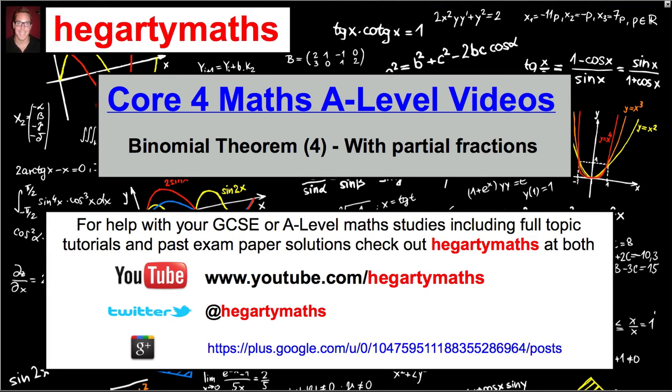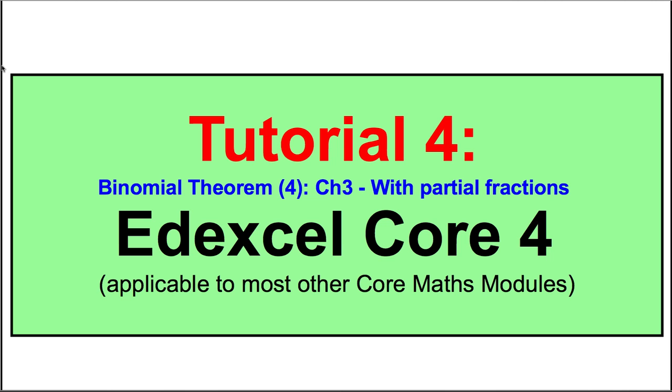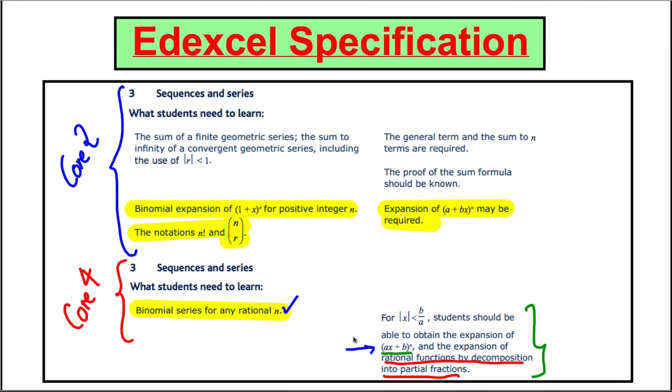Hi there and welcome to another Core 4 Maths A-Level video from Hegarty Maths. This is on the Binomial Theorem with Partial Fractions. As always, for more help with your A-Level, see YouTube, Twitter or Google+. This is for the Edexcel Core 4 course. We've done everything with regards to Binomial Theorem except for the expansion of rational functions by decomposition into partial fractions, and that's what we're going to do.